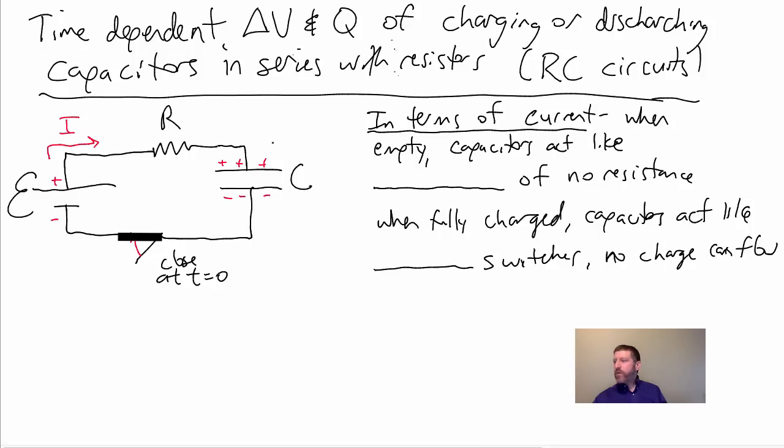And so, there's going to be some amount of charge dependent on time, which I'm going to call Q. Now, the thing is, when you first close this, first close that, what's going on? Like, what will be the current through here?